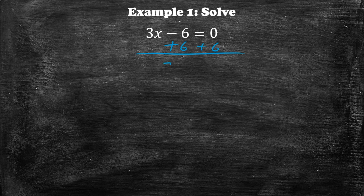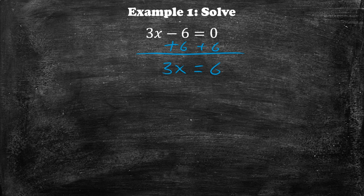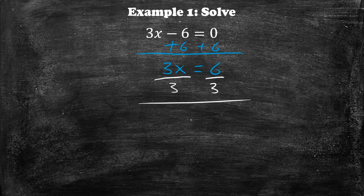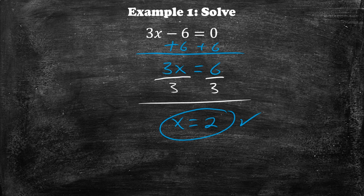When we do that, we will have 3x is equal to 6. Then to get x by itself, we see that it's 3 times x, so we have to do the opposite, which is division — divide by 3 on both sides. When we do that, we get x is equal to 2. One last step you can do is check your answer by plugging x equals 2 into the original equation.